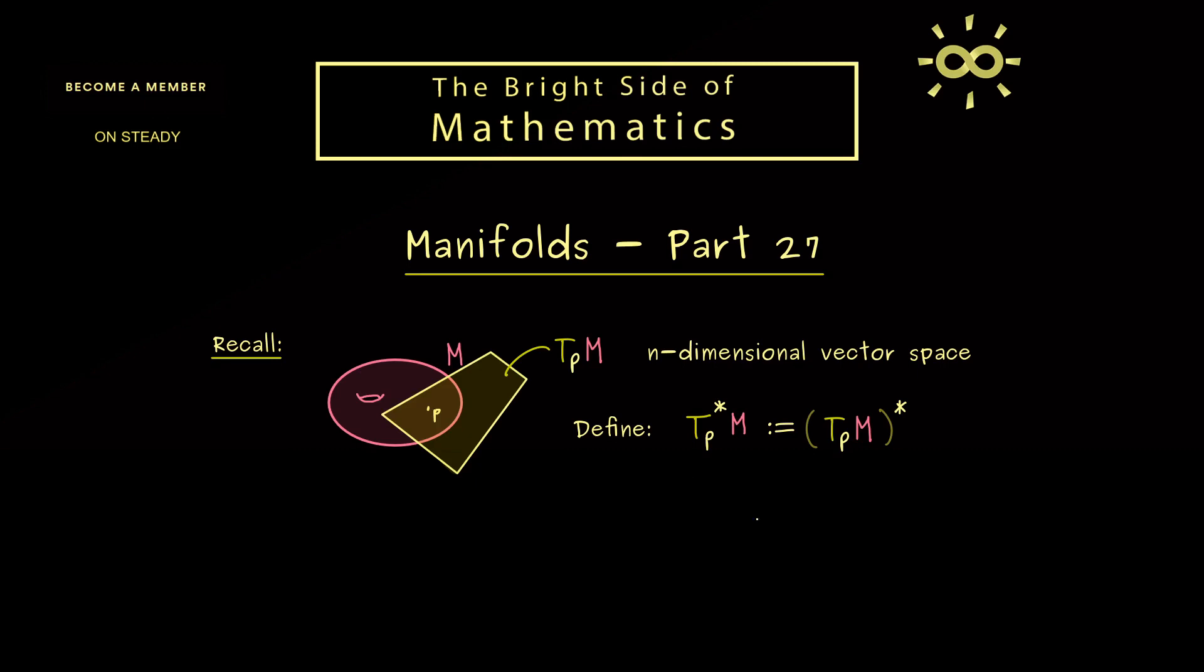And in the case you have never heard of the dual space at all, I give you the definition here. It is given by the set of all linear maps, maybe we call them alpha, defined on the vector space we consider, which is here T_pM. And they map into the corresponding field, which is given by R in our case. So in short, the dual space is given by the set of the linear functionals.